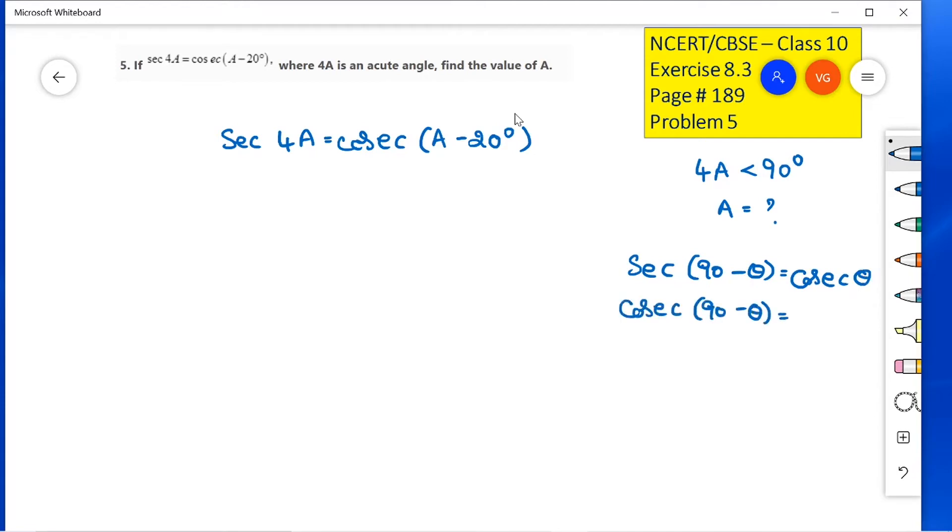So, either the left-hand side or right-hand side, you convert such that both sides of the equation contain the same trigonometric ratio. Here, I am converting this secant as cosecant (90 minus theta). Secant can be written as cosecant (90 minus theta).